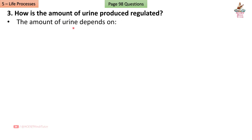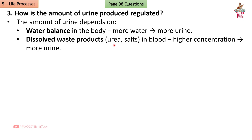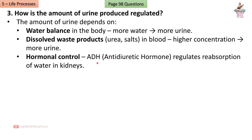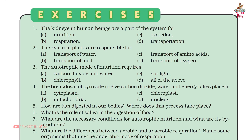Question 3: How is the amount of urine produced regulated? Answer: The amount of urine depends on water balance in the body — more water means more urine. It also depends on dissolved waste products like urea and salts in blood — higher concentration means more urine.